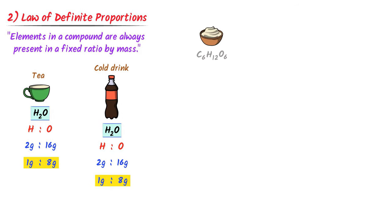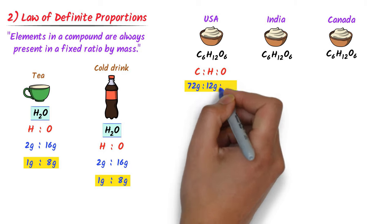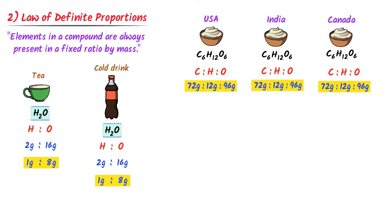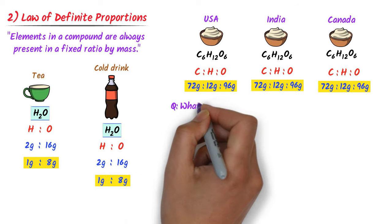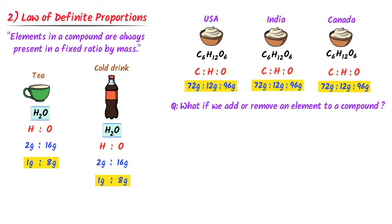Consider this example: if you buy simple sugar like glucose in the USA, India, or Canada, the ratio of masses of carbon to hydrogen to oxygen is 72 grams to 12 grams to 96 grams. An important question: what if we add or remove one element from a compound? The answer is simple — we get a new compound.